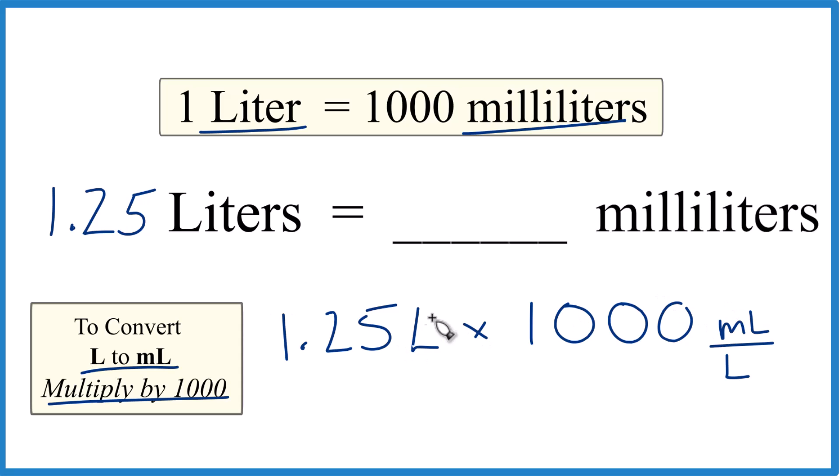Now when we multiply, we have liters on top and the bottom. They cancel out, that leaves us with milliliters. That's what we're looking for. So 1.25 times 1,000 milliliters is 1,250 milliliters.